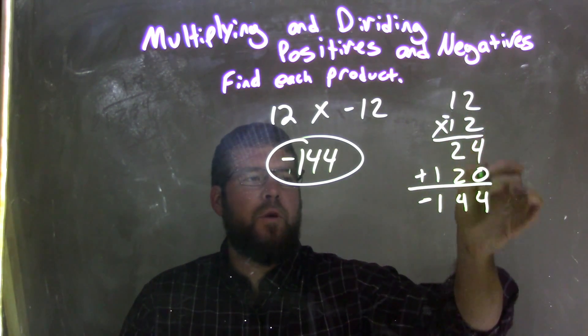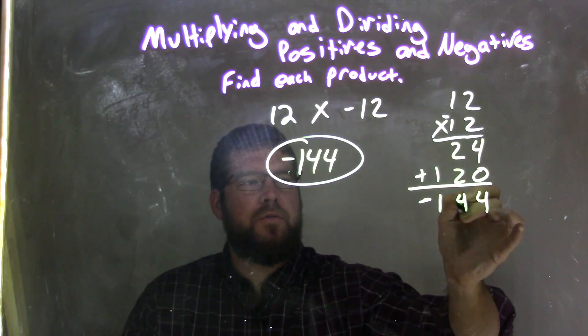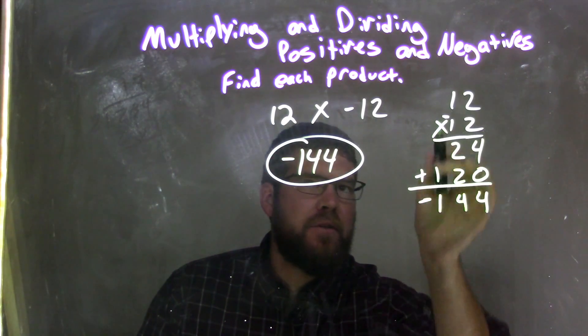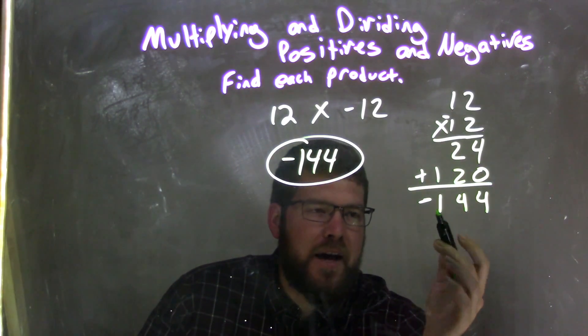We add them together. 4 plus 0 is 4. 2 plus 2 is 4. 1. And then we have a negative, because a positive times a negative is a negative, and so we have negative 144 as our final answer.